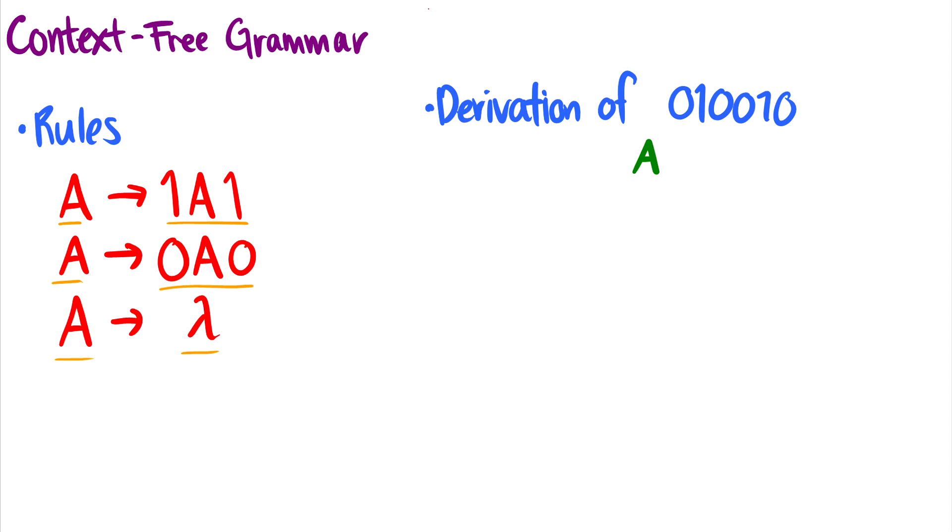So what does this look like? Well, if I want to do 010010, the first thing I should do is use the rule A goes to 0A0. We have A here, and then we can branch off 0A0.